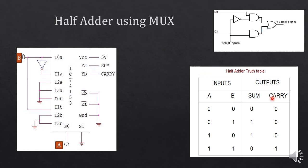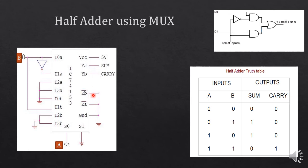For the carry output: when the select input is 0 the output is 0, so the first pin of the second multiplexer is connected to ground. When the select input is 1 the output equals B, so B is connected to the second pin of the second multiplexer. The next two pins are grounded. The enable pins are also grounded since the circuit works on inverted logic. The sum appears at YA and the carry at YB. Implement this circuit and verify the results.